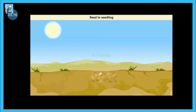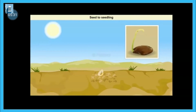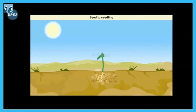Let us understand how this happens. You can see we have put a seed in soil. The seed absorbs water from the soil and after absorbing water, it grows into a bigger size. Then, when sunlight, water and appropriate weather conditions are available, the embryo inside it will start to grow. You can see the seed starts growing — roots develop from it, which absorb water and nutrients from the soil, and the shoot starts growing from above.